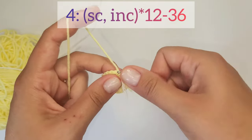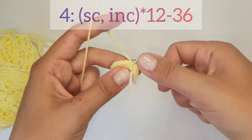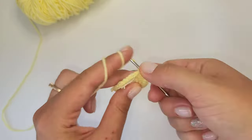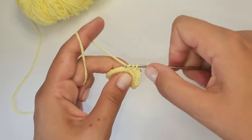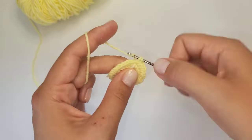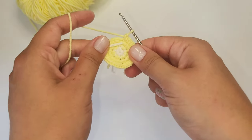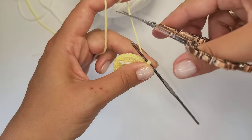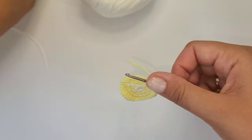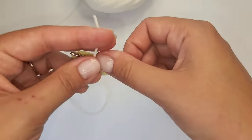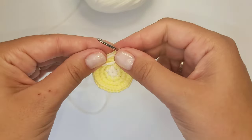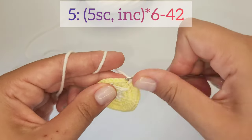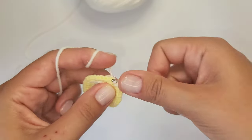A single crochet stitch followed by an increase, repeat. 36 stitches in total for round 4. That's how the detail looks at this point and we need to change the color again. Cut the thread, change the color and continue crocheting. This round we make 6 increases in total. 5 single crochet stitches followed by an increase. 42 stitches in total.